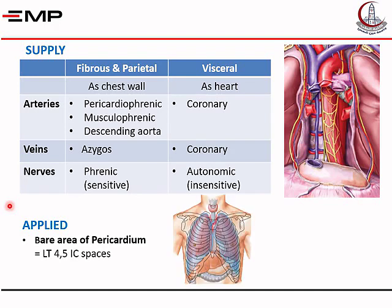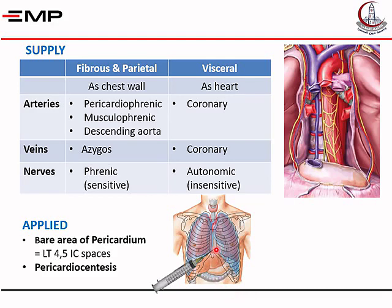The applied anatomy of the pericardium includes what is called a bare area of the pericardium, located anteriorly. When you studied the lungs, the anterior border of pleura and lung on the left side deviates to the left side of the sternum between the fourth and sixth costal cartilage, leaving a space where the pericardium is exposed to the chest wall and intercostal space directly. When there is accumulation of fluid inside the pericardium — called cardiac tamponade — this fluid has to be drained. It is done by introducing a needle through the fourth or fifth intercostal space, just below the fourth or fifth costal cartilage, to drain the fluid.